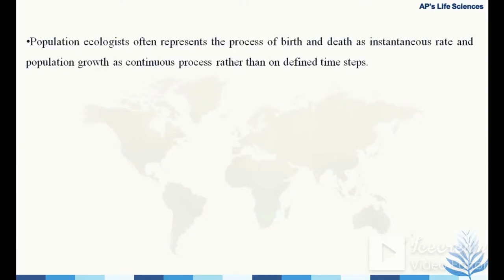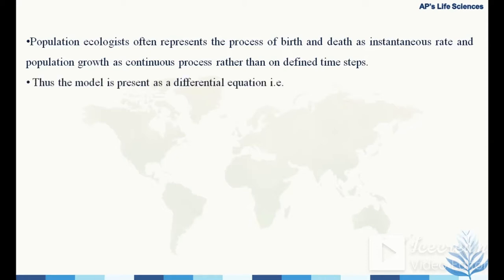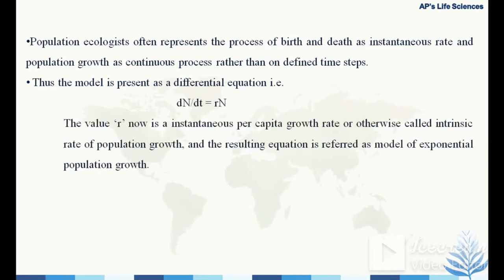Population ecologists often represent birth and death as instantaneous rates and population growth as a continuous process, rather than on defined time steps. The model is therefore expressed as a differential equation: dn/dt = r·N, where r is the instantaneous per capita growth rate — otherwise called the intrinsic rate of population growth. The resulting equation is referred to as the model of exponential population growth.